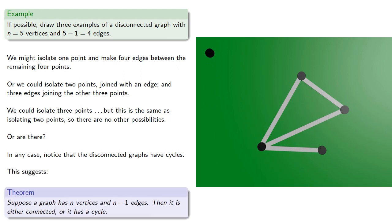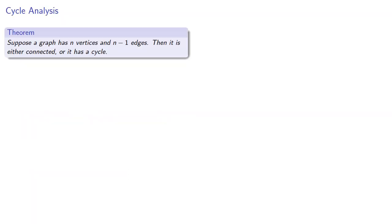Suppose a graph has n vertices and n-1 edges, then it is either connected or it has a cycle. Let's see how we might prove this.